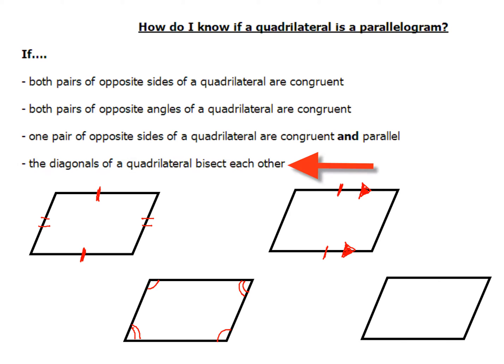Fourth way: you can show that the diagonals of a quadrilateral bisect each other. If you have a diagonal from one corner to the next and another one, when they intersect each other, if you can show that this diagonal gets bisected as well as the other one — this kind of looks like an envelope — if you can show that the diagonals bisect each other, your quadrilateral is a parallelogram.